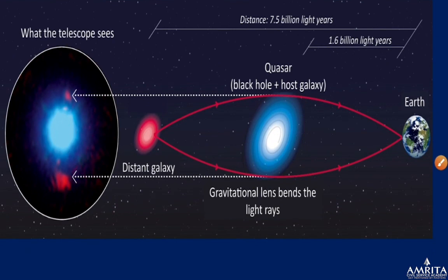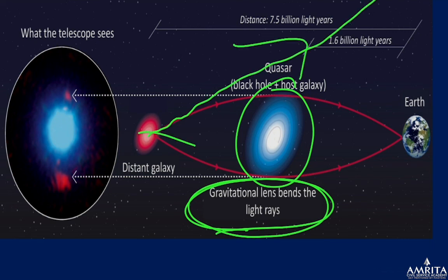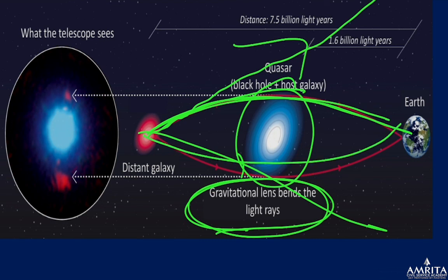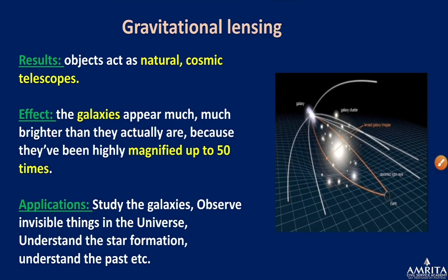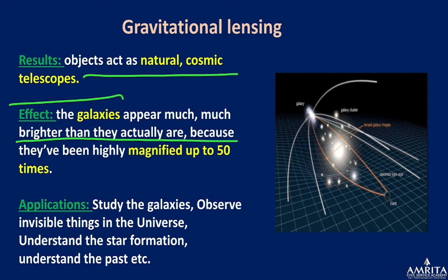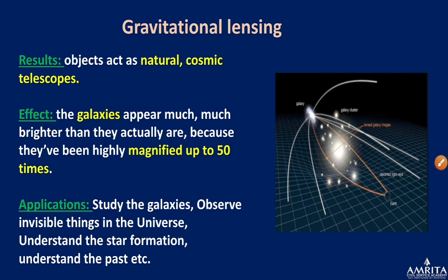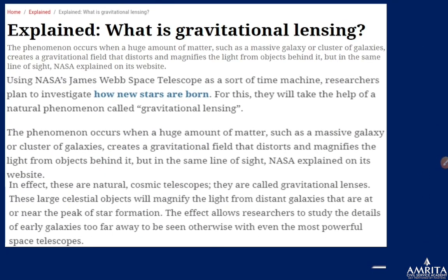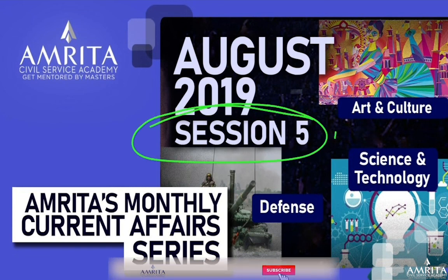For example, material in space acts as a gravitational lens — rays from a distant object that would normally miss Earth are bent by this material and reach us, allowing us to see what would otherwise be invisible. Objects in between act as natural cosmic telescopes, making galaxies appear much brighter — up to 50 times more magnified than they actually are. Applications include studying galaxies, exploring invisible things in the universe, understanding star formation, and exploring other mysteries of the universe.